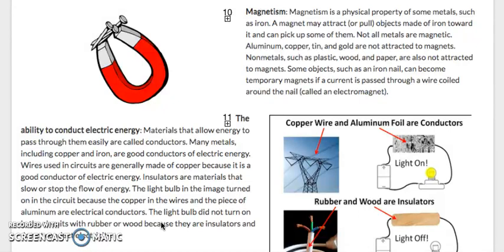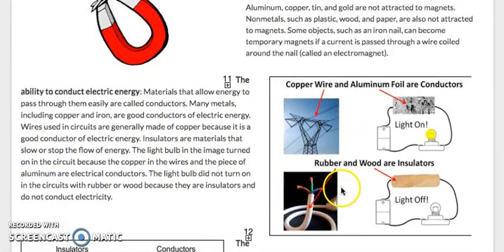The ability to conduct electricity. Materials that allow energy to pass through them easily are called conductors. Many metals, including copper and iron, are good conductors of electrical energy. Wires used in circuits are usually made of copper because it is a good conductor of electric energy. Insulators are materials that stop or slow the flow of energy. The light bulb in this image turned on the circuit because the copper in the wires and the piece of aluminum are electric conductors. The light bulb did not turn on in the circuits with rubber or wood because they are insulators and do not conduct electricity.